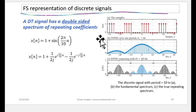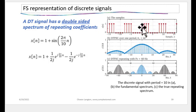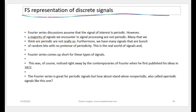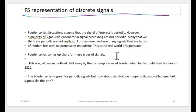Here is an example of a discrete time periodic signal — pulses that repeat. It has a spectrum that itself repeats. So far, Fourier series discussions have assumed the signal is periodic. However, the majority of signals we encounter are not periodic. For example, a voice signal like someone talking, if sampled, would appear to be random with no obvious periodicity.